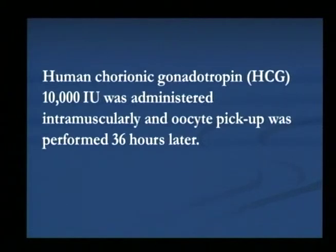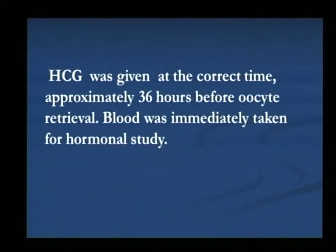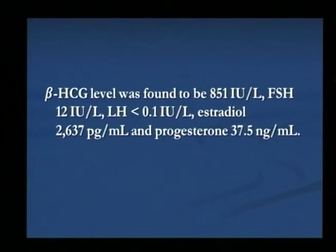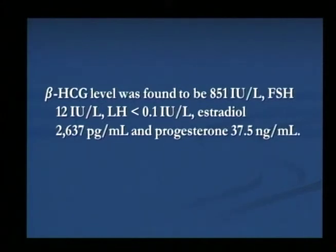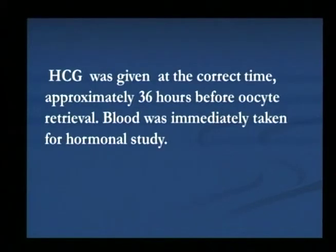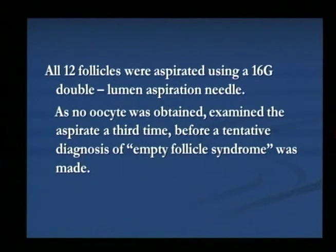HCG was given intramuscularly and oocyte pick-up was done 36 hours later. Approximately 36 hours before retrieval, blood was taken for hormonal study. Beta-HCG was about 851 IU/L, FSH 12, LH less than 0.1, estradiol 2637, and progesterone 37.5. The progesterone level of 37.5 is important. 12 follicles were aspirated and no oocyte was obtained. The embryologist looked a second and third time before a tentative diagnosis of Empty Follicle Syndrome was made, because the hormonal picture was very supportive.